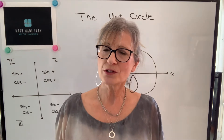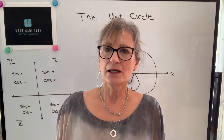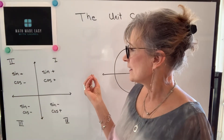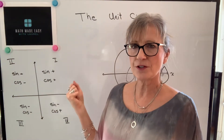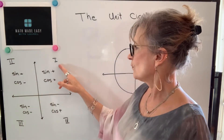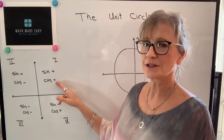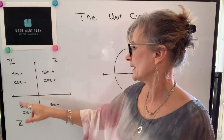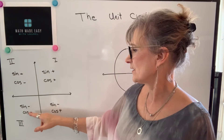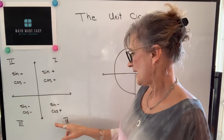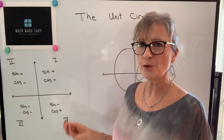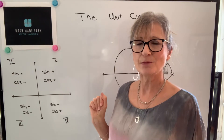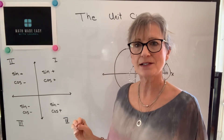We're going to talk about what the unit circle is, and I want to first review the cosine function and the sine function in the various quadrants. In quadrant one both sine and cos are positive. In quadrant two sine is positive, cos is negative. In quadrant three sine is negative and cos is negative. In quadrant four sine is negative, cos is positive. The way you remember that is sine will be positive wherever y is positive, and cos will be positive wherever x is positive.